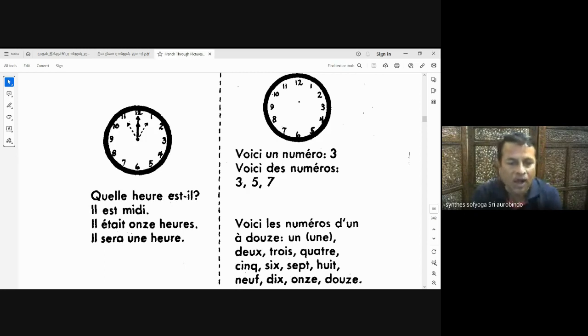Voici les numéros. Here are the numbers: un, deux, trois, quatre, cinq, six, sept, huit, neuf, dix, onze, douze.